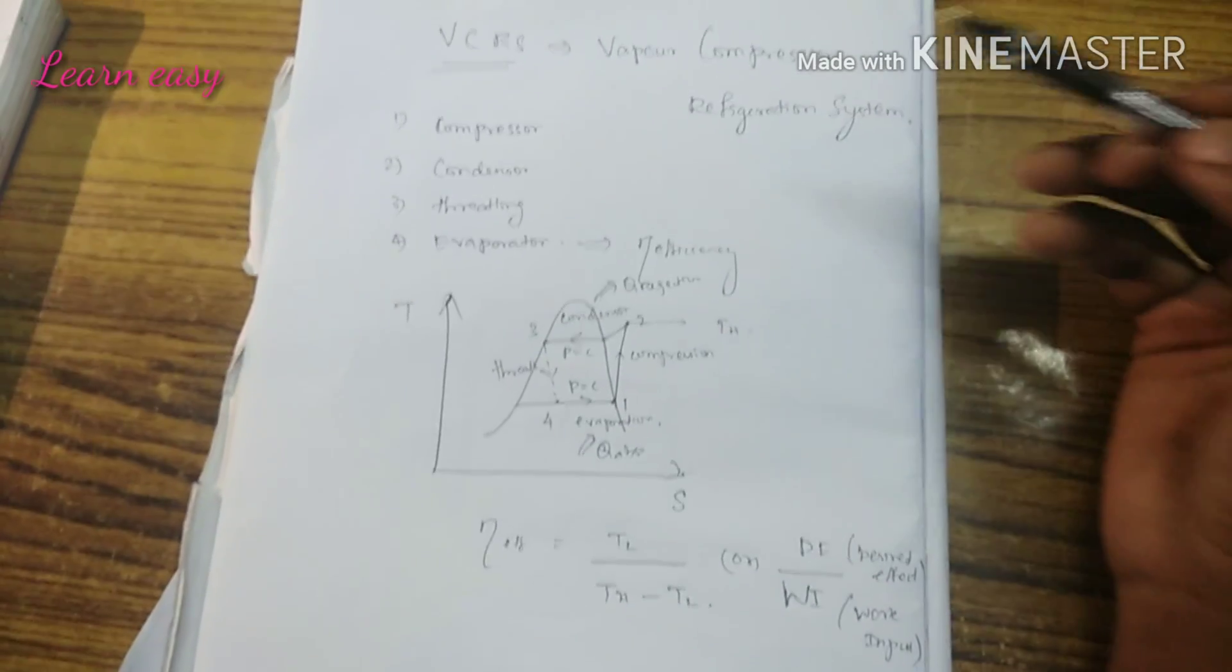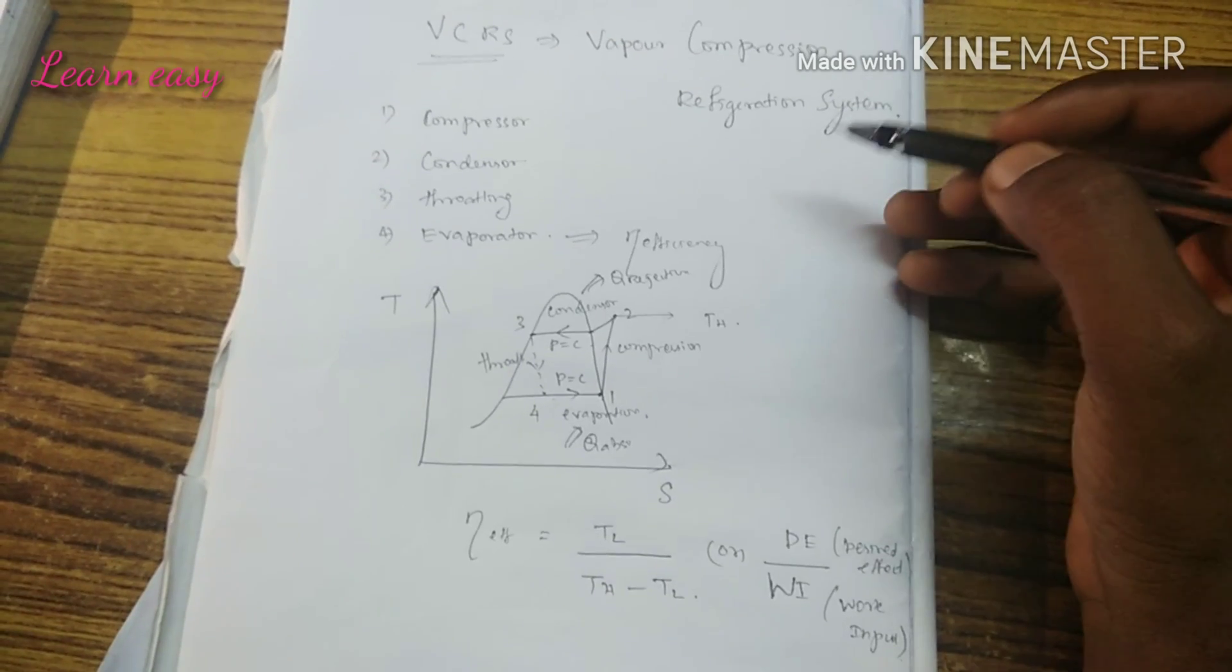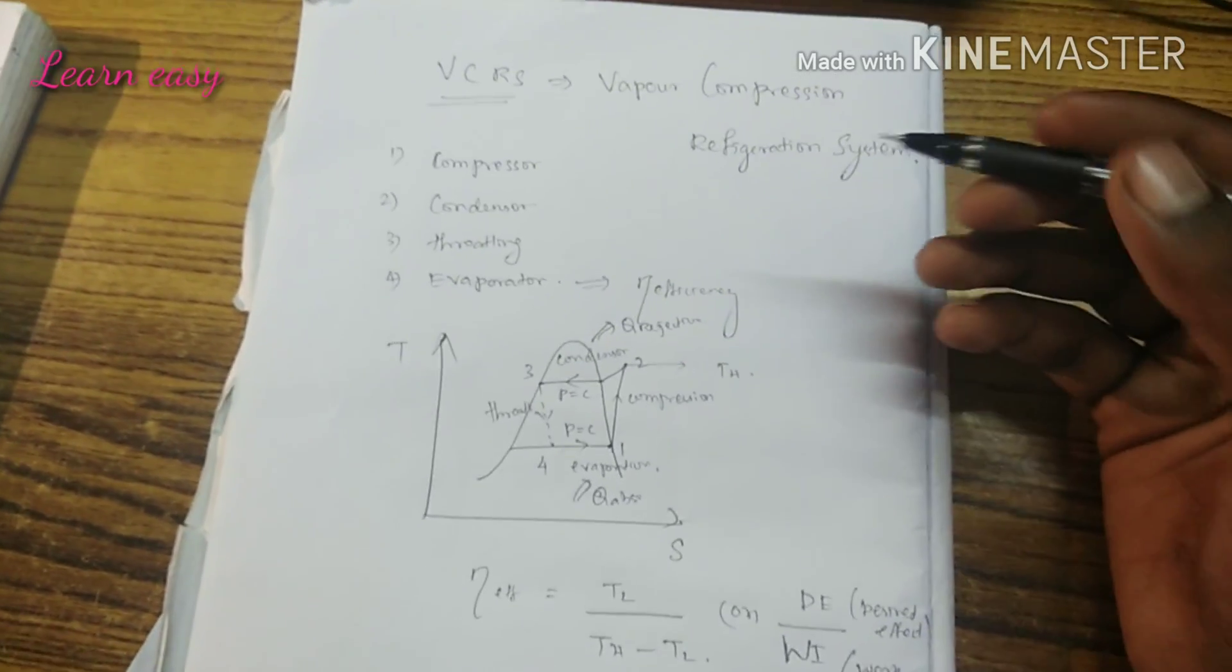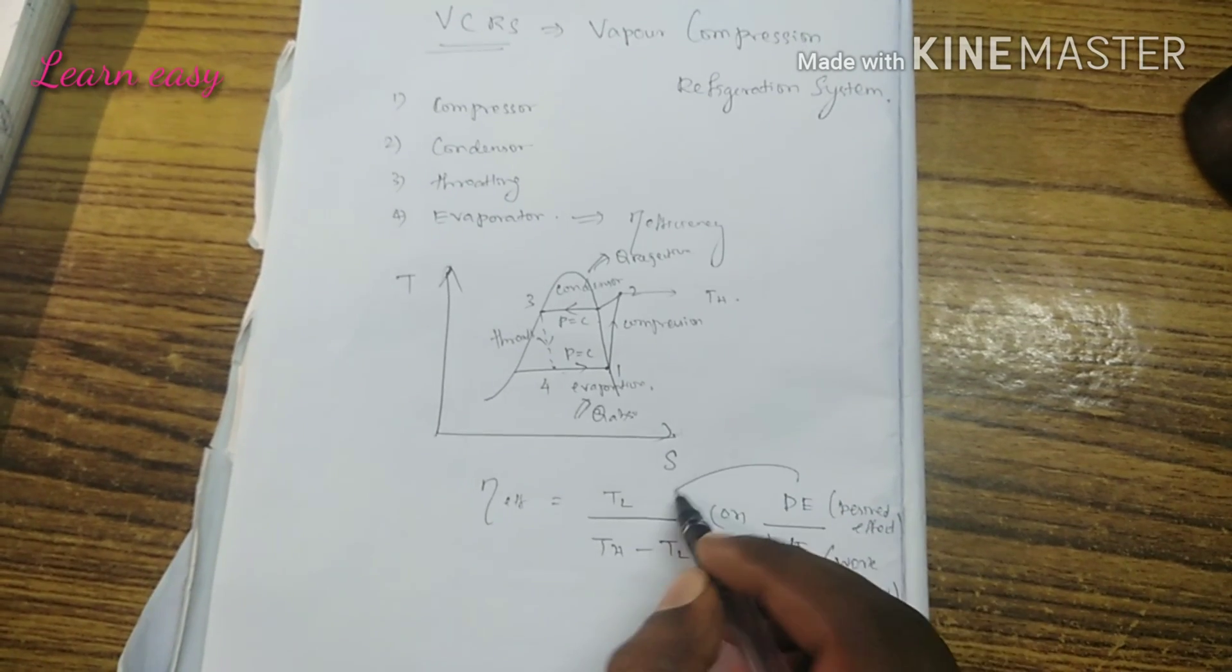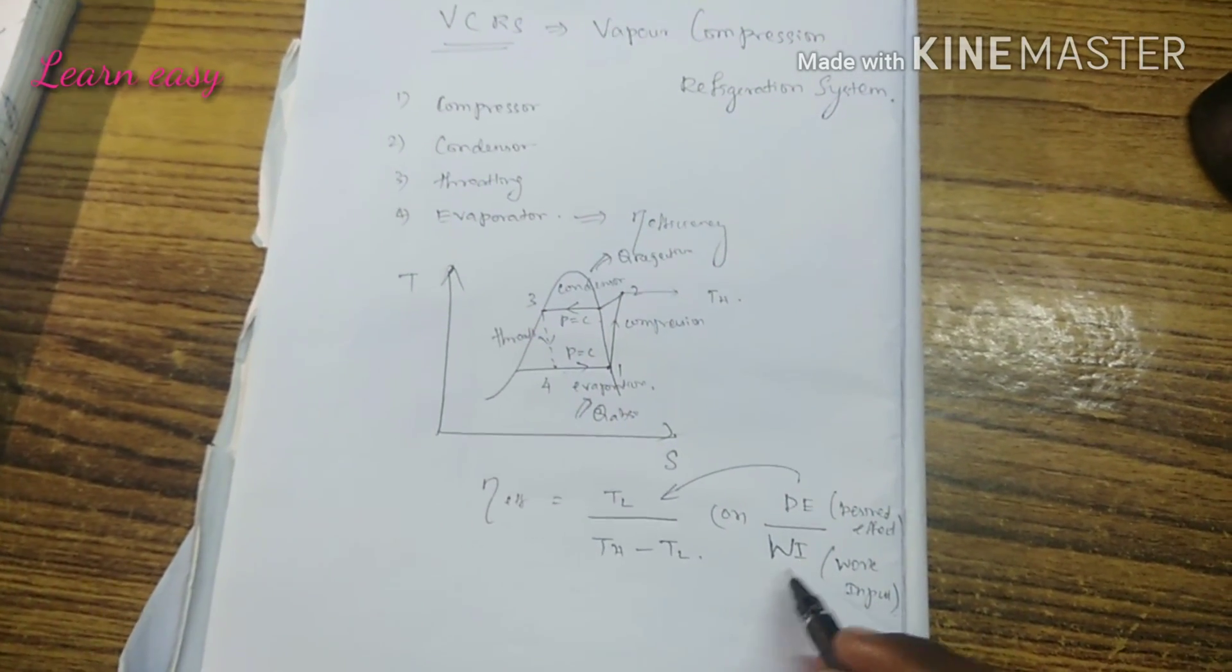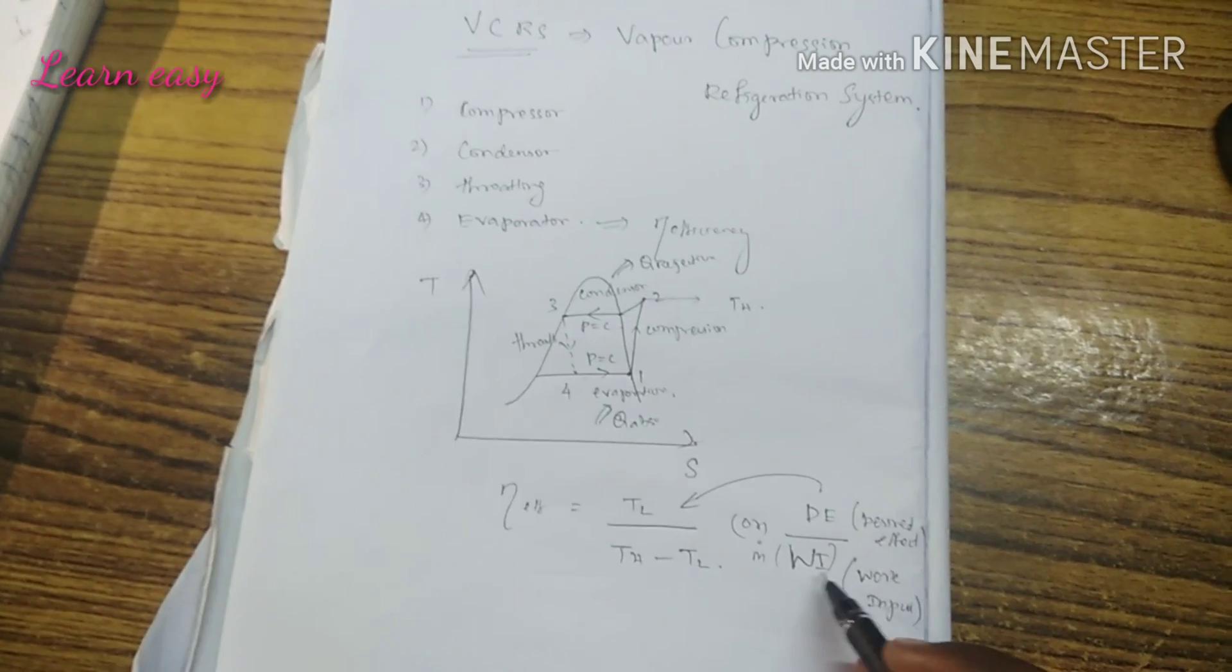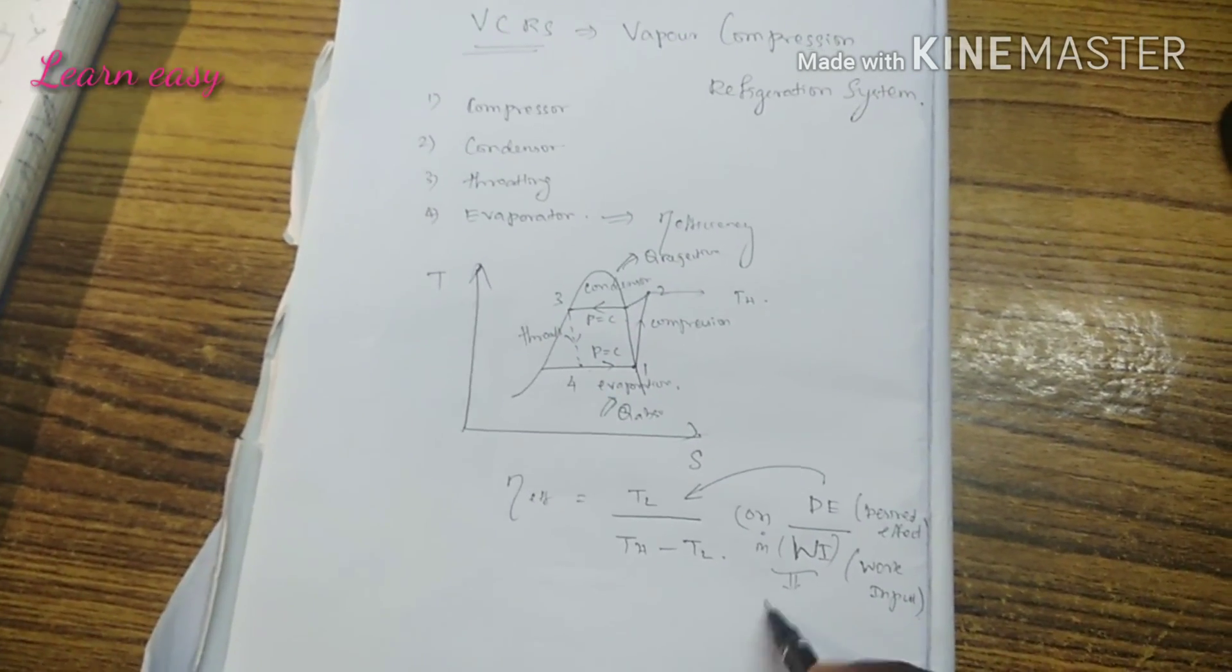In a refrigeration cycle, the desired effect is getting the lowest temperature to make the room or system cool. The work input is the higher temperature minus lower temperature. If you multiply by M, the mass flow rate, you get power.